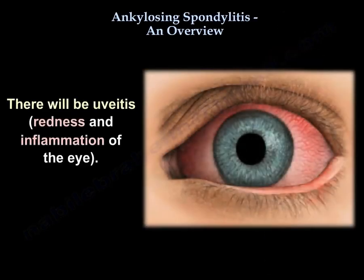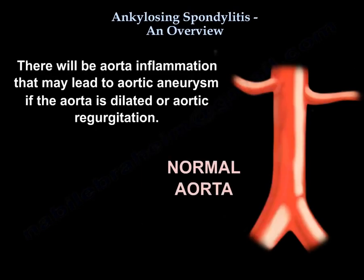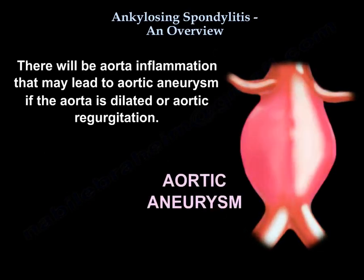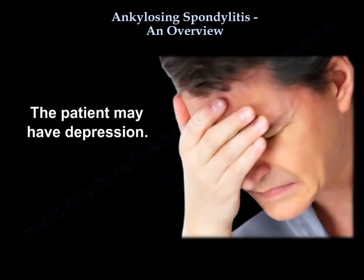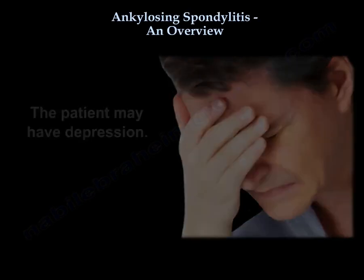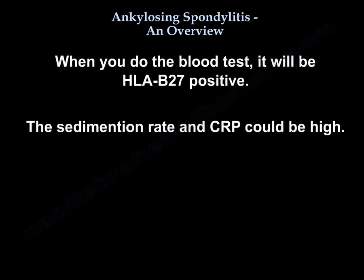Patients may develop systemic autoimmune features including fever and malaise. Uveitis — redness and inflammation of the eye — is a common extra-articular feature. Aortic inflammation may lead to an aneurysm or aortic regurgitation if the aorta dilates. Patients may also have depression. Blood tests will show HLA-B27 positive, with elevated ESR and CRP.